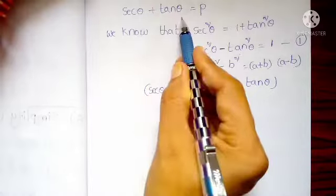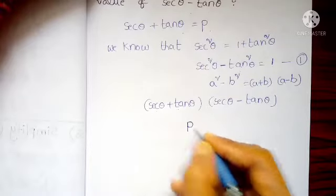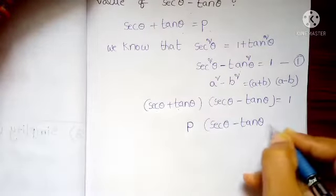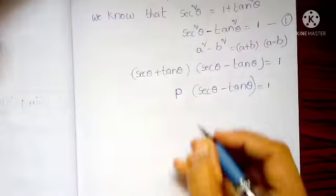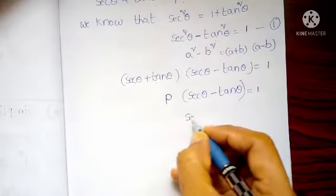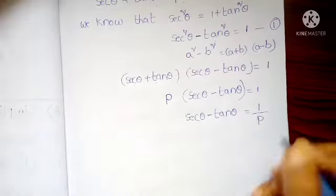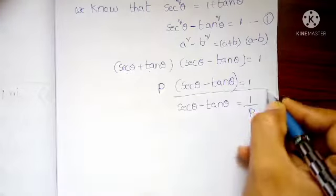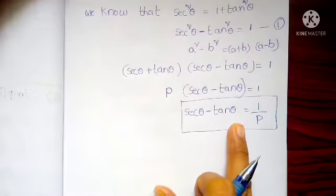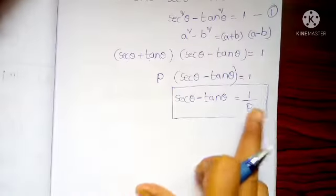Secant theta plus tan theta means what they given: secant theta plus tan theta equals P. So substitute P, and the remaining one is secant theta minus tan theta, which equals 1. So secant theta minus tan theta equals 1 by P. Finally, we got the answer secant theta minus tan theta equals 1 by P.